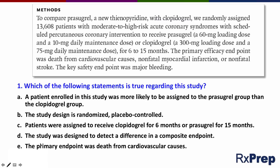Now let's answer a question based on the methods section: Which of the following statements is true regarding this study? Answer A states that a patient enrolled in this study was more likely to be assigned to the prazegrel group than to the clopidogrel group. Since patients were randomly assigned, a patient was equally likely to be assigned to either group. So answer A is not correct.